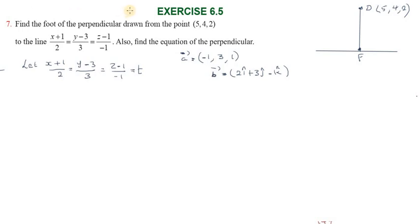Hi students, greetings from Service Education Academy. This is question number 7 from section 6.5: find the foot of the perpendicular from the point (5, 4, 2) to the line, and also find the equation of the perpendicular. The Cartesian equation of the line is: (x+1)/2 = (y-3)/3 = (z-1)/(-1).